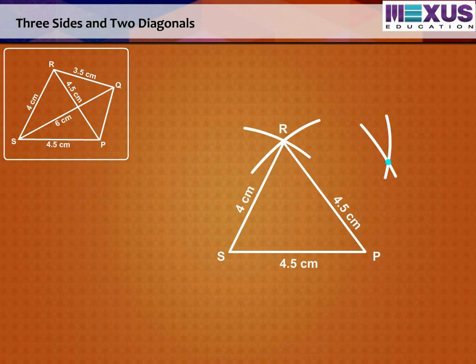Now, Q is the point of intersection of two arcs since Q lies on both the arcs. So, mark their intersection as Q and join PQ and RQ to complete it as PQRS.